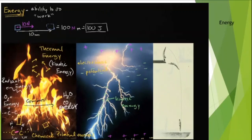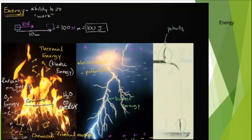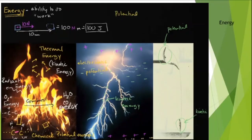A classic physics example is a person at the top of a diving board — they have gravitational potential energy by virtue of their position. As they fall, most of that potential energy is converted into kinetic energy. The big takeaway: energy is the ability to do work, it cannot be created or destroyed, but it can be converted from one form to another. All forms of energy can be thought of in two big buckets: potential energy or kinetic energy.